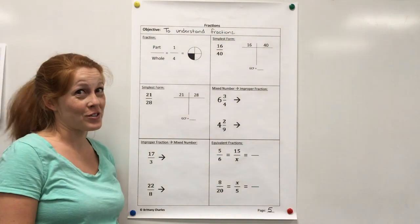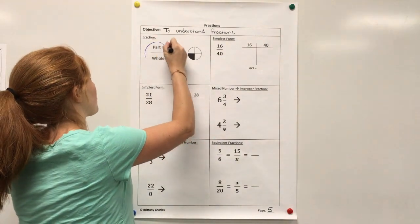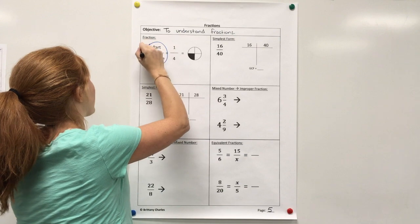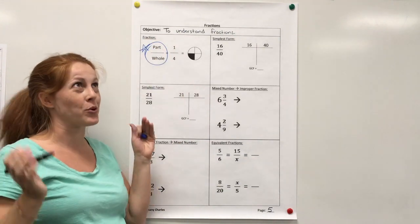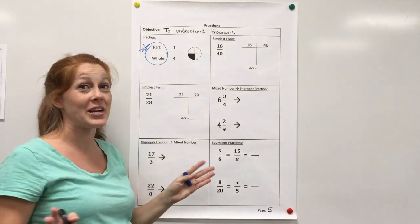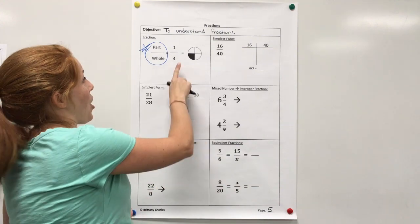Alright, well first things first, make sure you circle this part over whole, put a star by it, it is very important. I'm going to be saying it all year. When in doubt, part over whole.